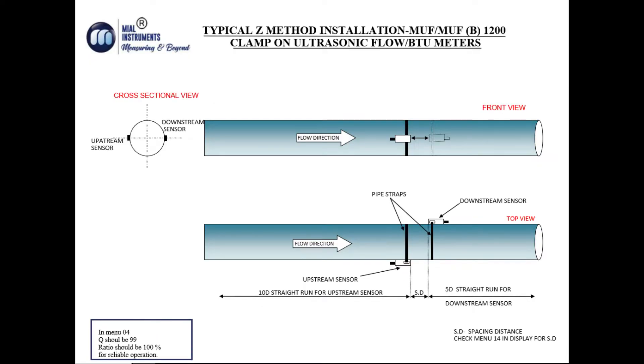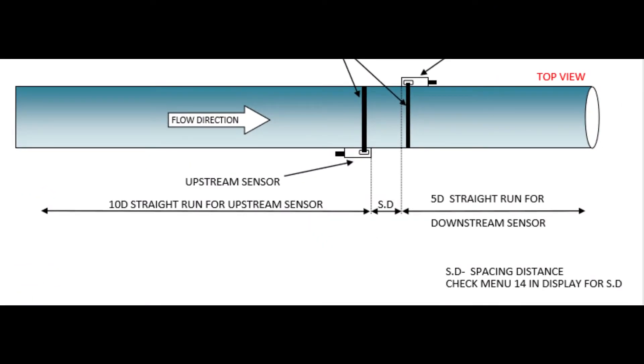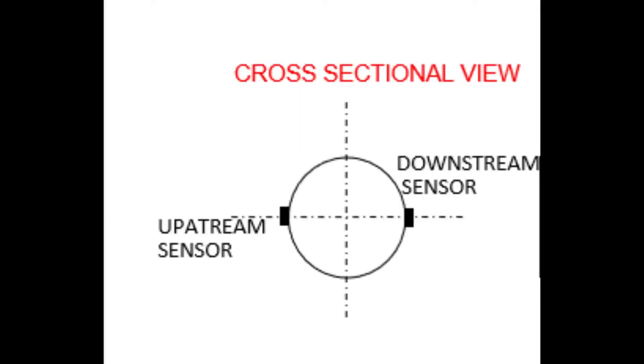This is the orthographic view of a typical Z method installation, and this is the top view of the pipe. Generally, it is not recommended to install at the top and bottom side of the pipe. See the cross-sectional view of the pipe and flow sensors. The sensors are fixed on the left and right sides of the pipe, not the top and bottom sides.